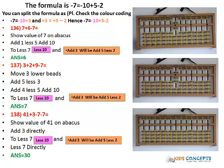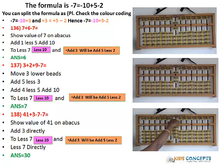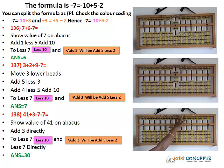The third sum is 41 plus 3 minus 7 minus 7. Start with 41, add 3 — you can directly add since the beads are available. Then less 7: less 10 add 5 less 2. Now again less 7 — you can do this directly on the beads, so do it directly. Answer is 30.